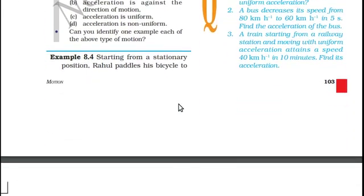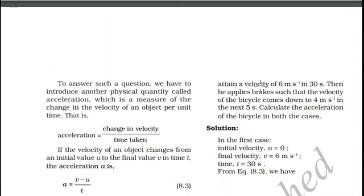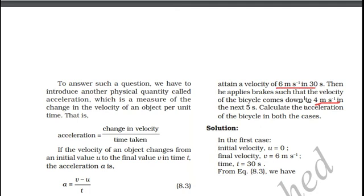Now let us see Example 8.4. Starting from a stationary position means the body is at rest, so the initial velocity is zero. Rahul paddles his bicycle to attain a velocity of 6 meters per second in 30 seconds — this is the final velocity and the time interval is 30 seconds. Then he applies brakes such that the velocity of the bicycle comes down to 4 meters per second in the next 5 seconds.